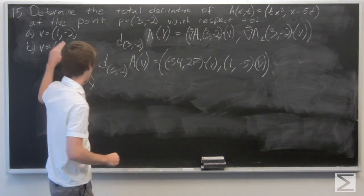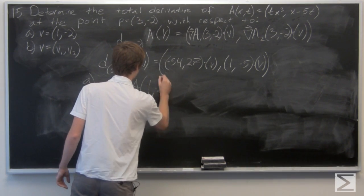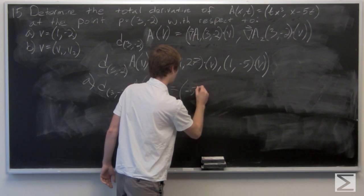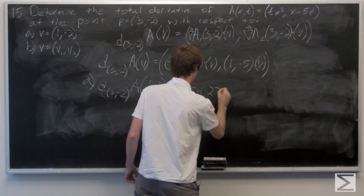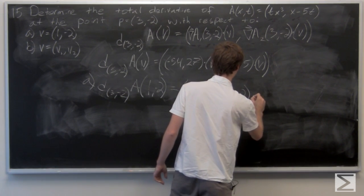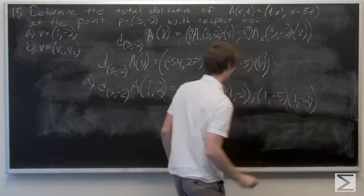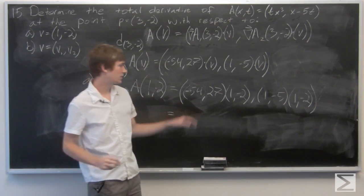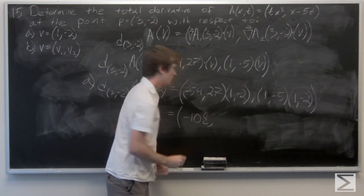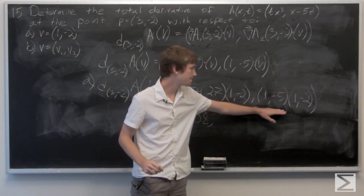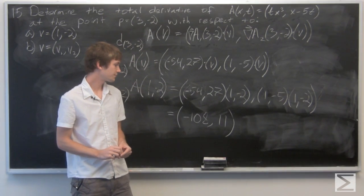For part a, we evaluate the dot product in the normal way with the vector (1, negative 2). We get negative 108 for the first component. And for the second component, we get 11. So that's our answer for part a.